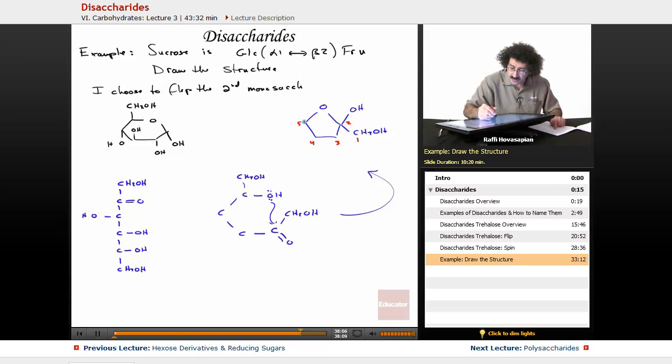So my fructose is going to look like this. Beta, that means this is the number one carbon, number two carbon. Let me go ahead and number these: one, two, three, four, and five. Let me put all of my substituents on here. This is my alpha glucose and this is going to be my beta fructose.